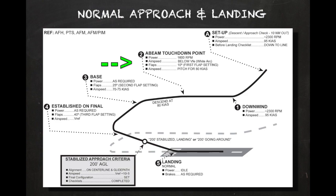For our scenario, we will assume we are number one for landing with no traffic ahead. The first step is to reduce power slowly and smoothly to 1600 RPM and pitch the nose slightly up to maintain altitude, allowing the aircraft to decelerate. After verifying verbally that the airspeed is below VFE — the maximum flap extended speed of 103 knots — flaps are extended to 10 degrees. A noticeable pitch-up will be felt as the flaps are deployed, so be prepared to apply nose-down inputs and re-trim.